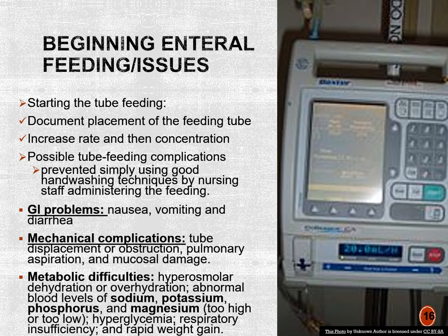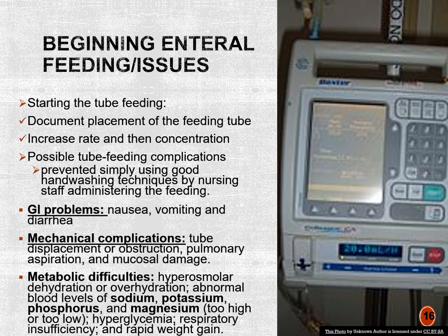When beginning enteral tube feedings, the first issue is documenting tube placement. The first time, it's important to obtain a chest X-ray to determine placement into the stomach. Subsequently, we use a 60 ml syringe to aspirate gastric contents, which confirms the tube is in the stomach. The protocol is to increase the rate first, then the concentration. Positioning is critical to prevent aspiration — patients on enteral tube feedings should be in a semi-Fowler's position with the head of the bed elevated 30 to 45 degrees. Adverse side effects include GI issues: nausea, vomiting, and diarrhea.